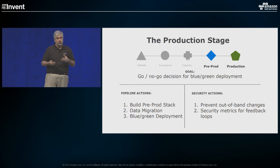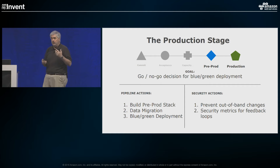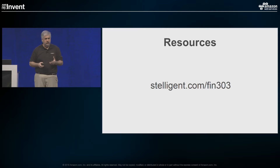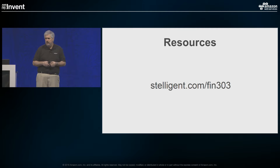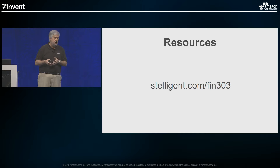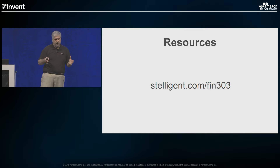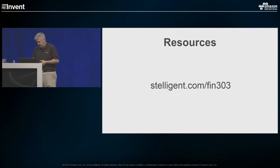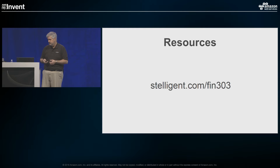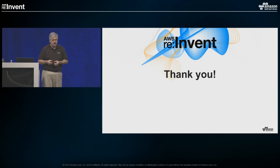As Alan mentioned, there's a lot of code around everything we've talked about. There's a web page at stelligent.com/fin303 that'll point you to a series of blog articles as well as GitHub repos with information on everything we've talked about today. It's all open source and available for you to use. I would encourage everyone to get out there, take a look at it, and try to incorporate these processes into your continuous delivery pipeline. Thank you everyone.